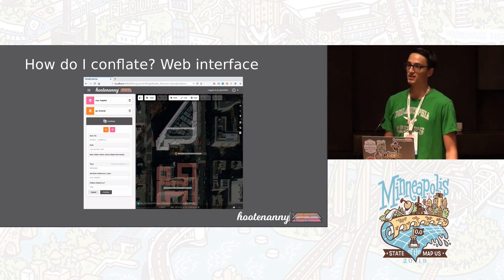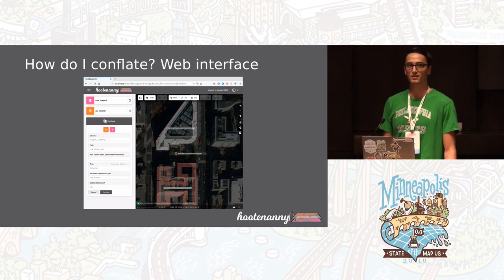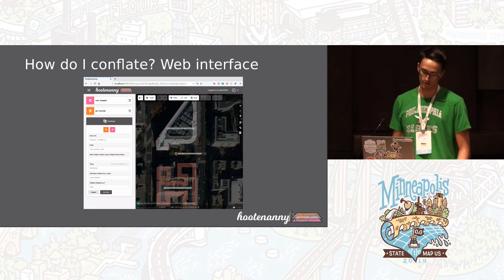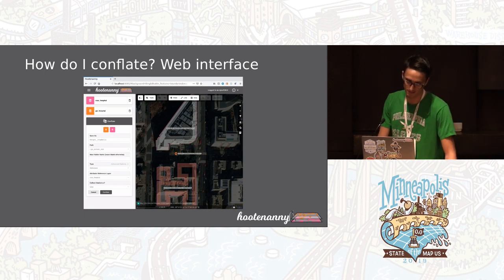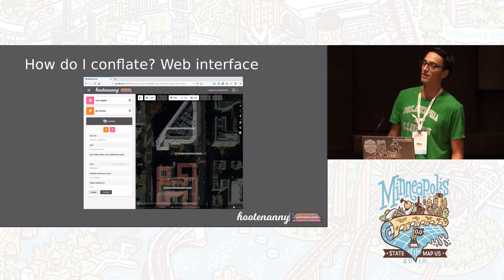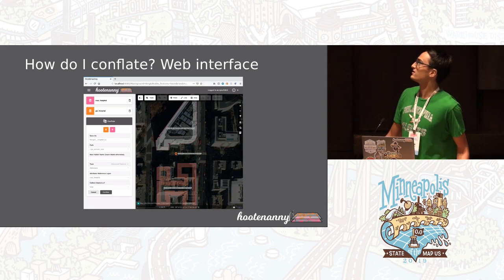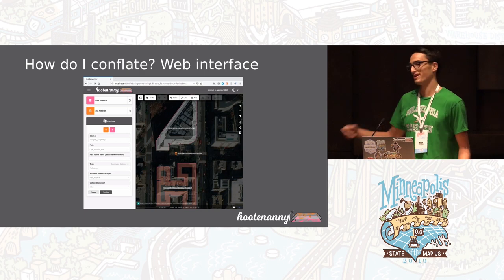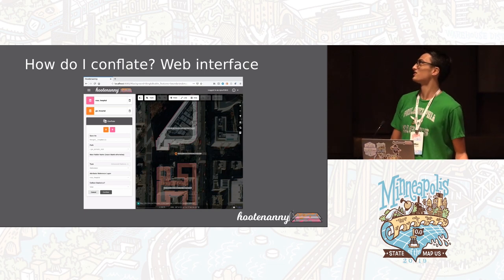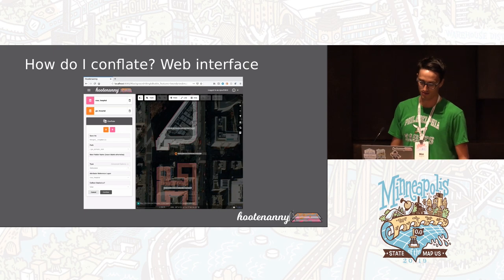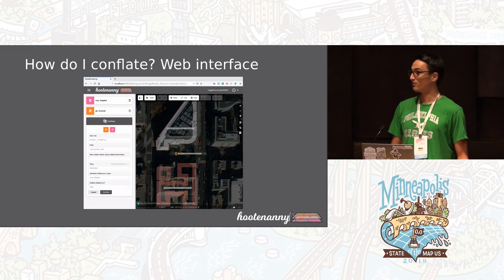The data sets also persist in the same flavor of tables that nodes, ways, and relations do in the Postgres database that's part of the Rails app. It's also a client of OpenStreetMap, so if you have an instance of Hootenanny running, you can log in with your OSM credentials just like you do in Tasking Manager and similar apps.